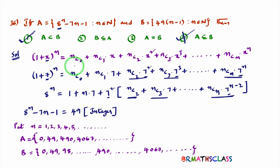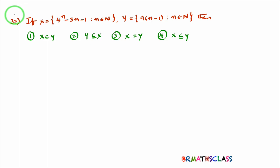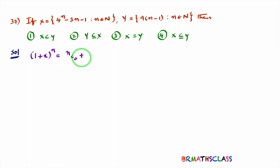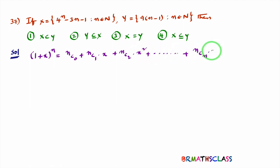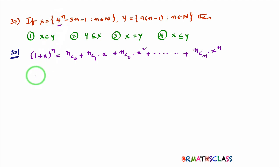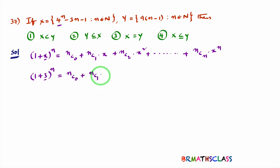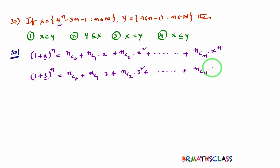We will now solve a similar problem — question number 37. Here set X involves 4 power n, and set Y involves multiples of 9. We again need the binomial theorem: 1 plus x whole power n equals nc0 plus nc1 into x plus nc2 into x square plus and so on plus ncn into x power n. Here 4 power n can be written as 1 plus 3 whole power n, so wherever x appears, write 3.